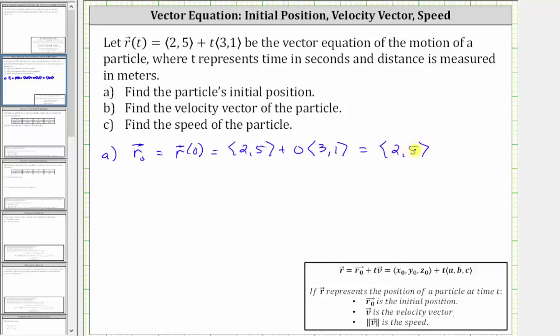Again, this is the black vector that we saw that had a terminal point on the line. For part b, we're asked to find the velocity vector, and the velocity vector is the vector with components three comma one.